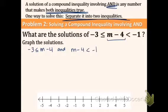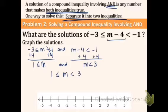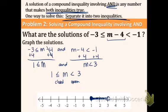Now we use operations to get M by itself — add four on both sides. That gives positive one on the left side. Then add four to the other inequality: M is less than three. For an AND inequality we can merge them together, giving one M in the middle: one is less than or equal to M, which is less than three. Graph with a closed circle on one and an open circle on three. For AND inequalities, the solution is between the two endpoints; for OR, they go in opposite directions.